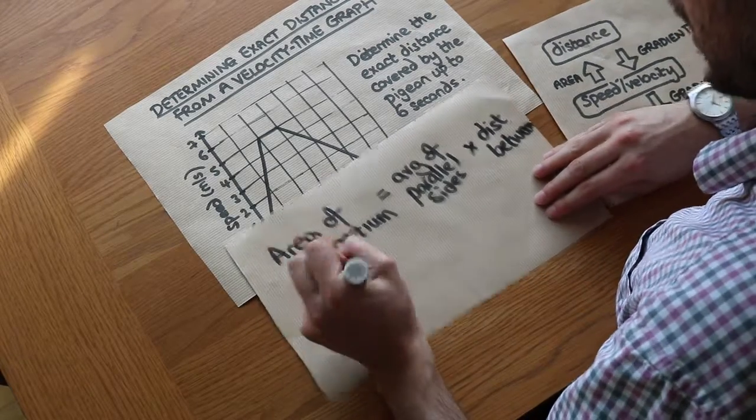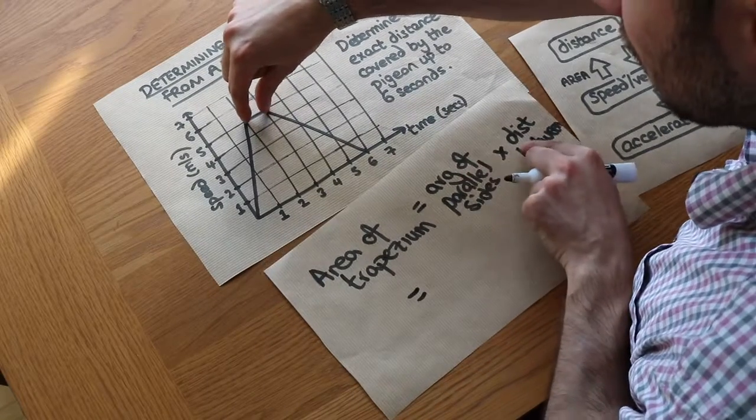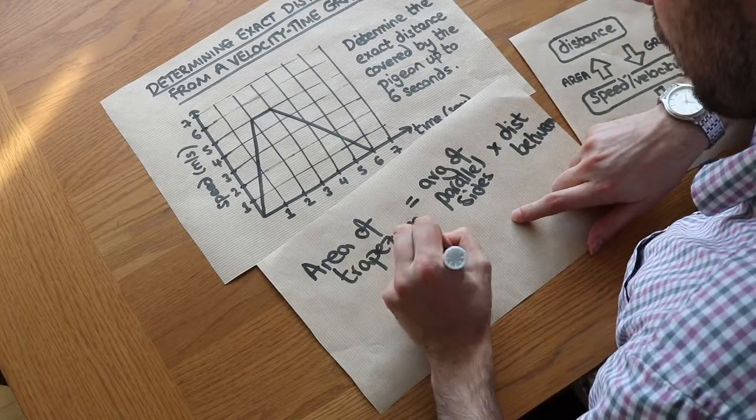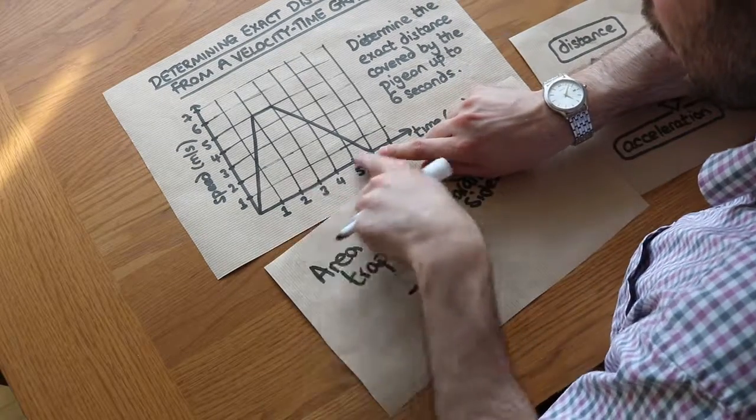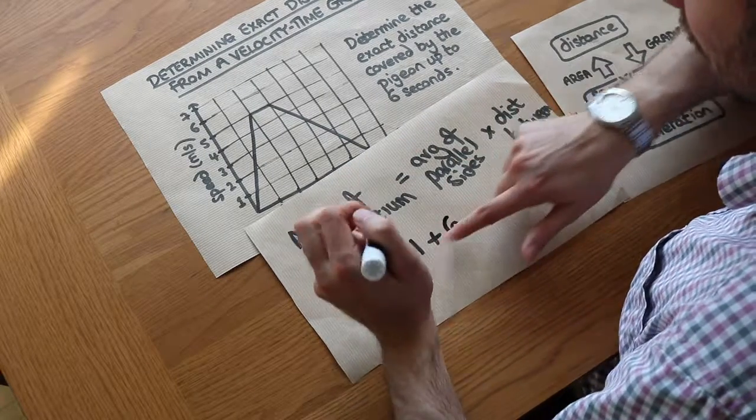So if we apply it to this shape here, these are our two parallel sides. What is that length there? Well it's one second, so we're going to do one plus the length of the other parallel side, which is six. To find the average of those two values, you add them divided by two.